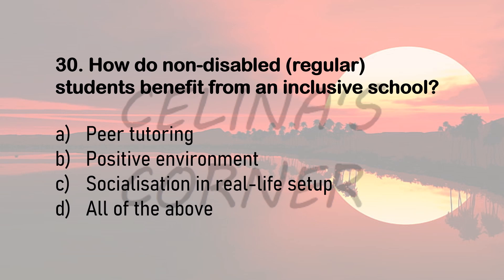Question 30. How do non-disabled, i.e. regular students benefit from an inclusive school? Option A: peer tutoring — children who finish fast in class can get bored, but in an inclusive school they can tutor children who are lagging behind, keeping them engaged and helping them retain material better. Option B: positive environment — they get real life experience of how to behave in a community with different types of people. Option C: socialization in a real life setup — they learn how to interact with people who are not like themselves. The correct answer is option D, all of the above.